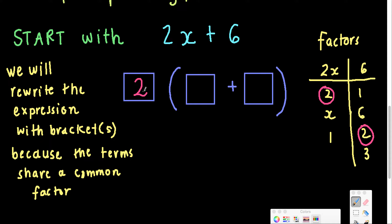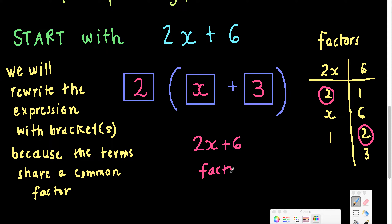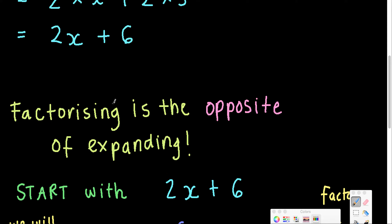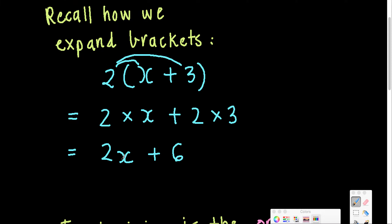We worked out that the highest common factor of the two terms is 2, so I put that out the front. The next thing is to decide what we multiply by 2. 2 times something gives us 2x — that must be x, since 2 times x is 2x. The second part asks 2 times a number to give me 6 — so that number has to be 3. So starting with 2x plus 6, factorized — introducing a bracket and taking out the highest common factor — gives us 2(x + 3). We start with the expression and finish with something that has a bracket, which is exactly the reverse of what we started with when we expanded.